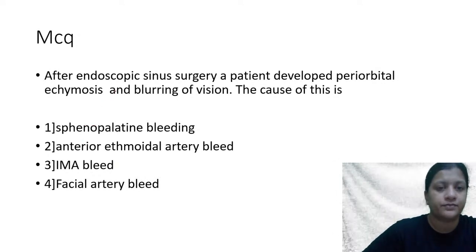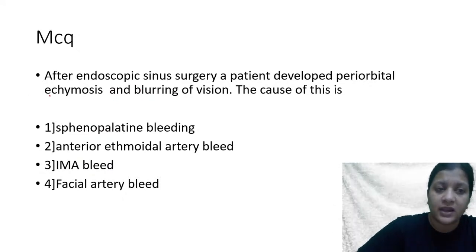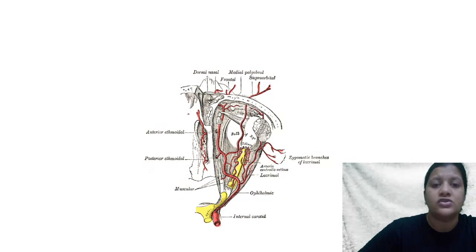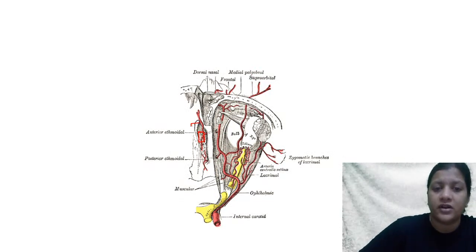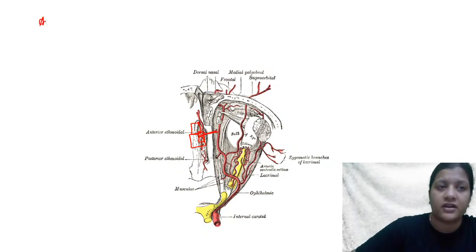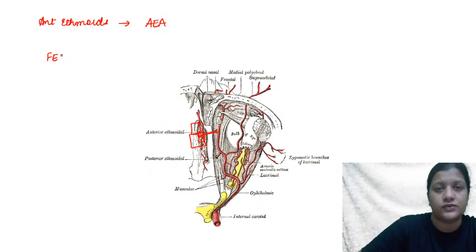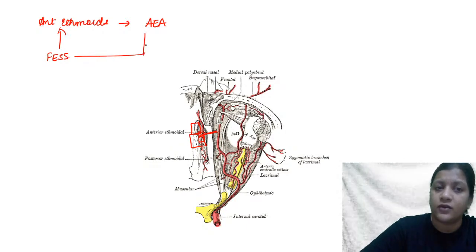Neha Rajan says option four. The main artery responsible for causing periorbital ecchymosis and blurring of vision is the anterior ethmoidal artery. The ethmoidal air cells are supplied by the anterior ethmoidal artery, which runs in the roof of the anterior ethmoids.